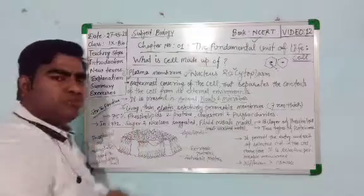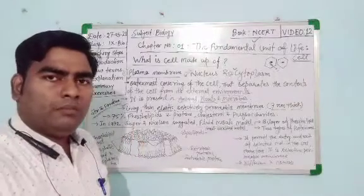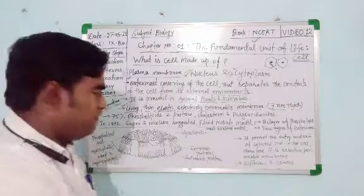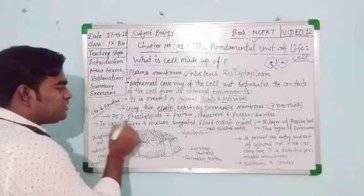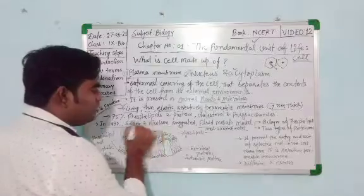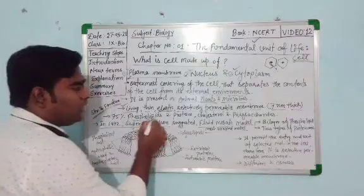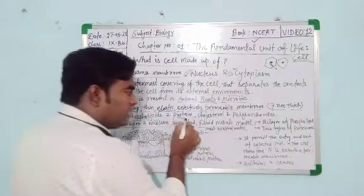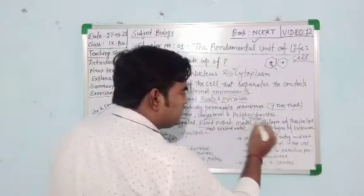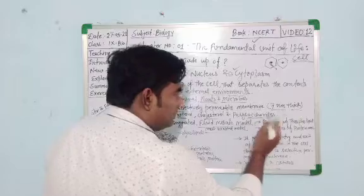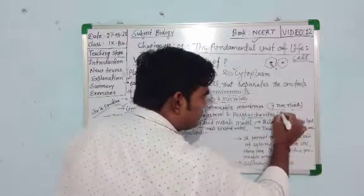The chemical composition of plasma membrane includes 75% phospholipid and protein, cholesterol, and polysaccharide, which means sugar.